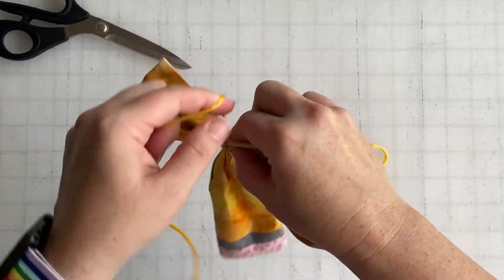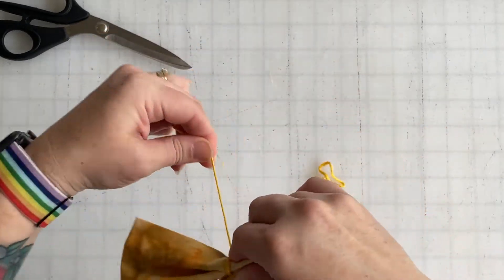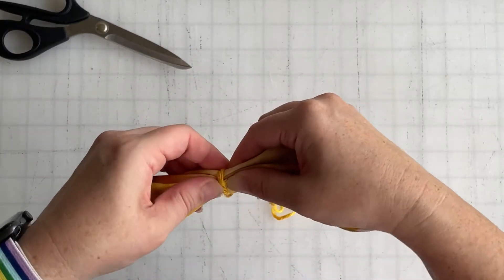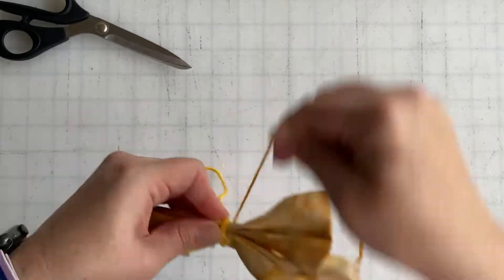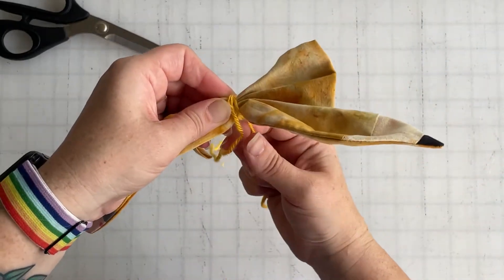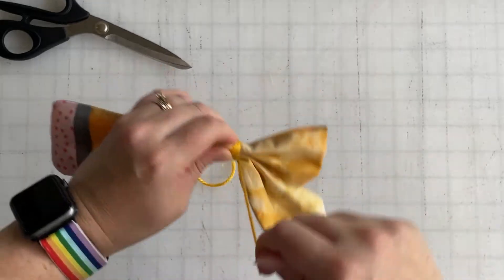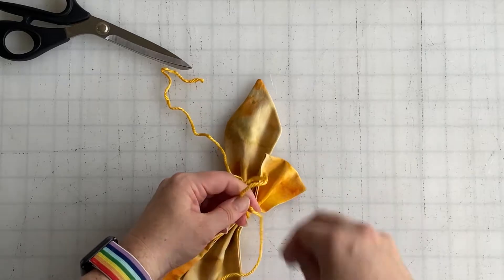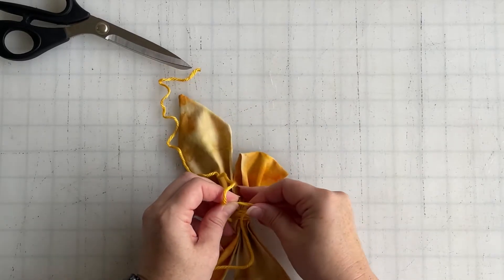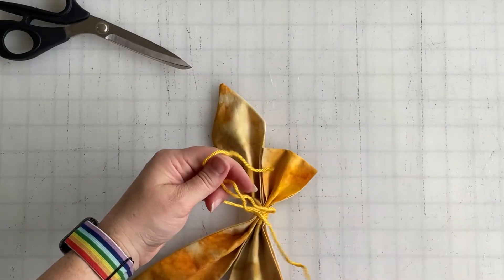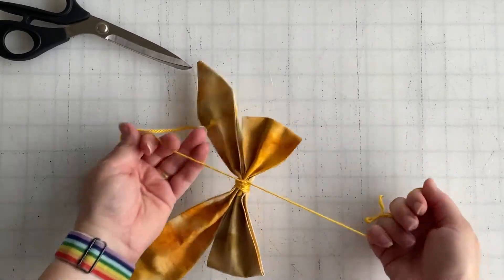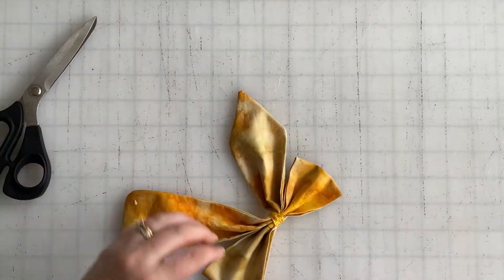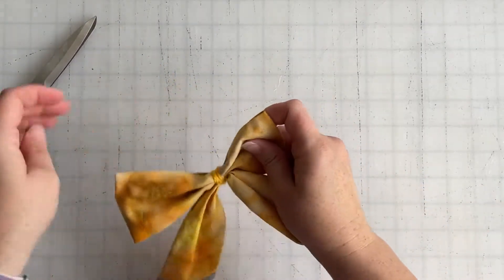Give it a good wrap right in that middle again and tie it off. This is a cheating way to tie a perfect bow, it's pretty awesome.